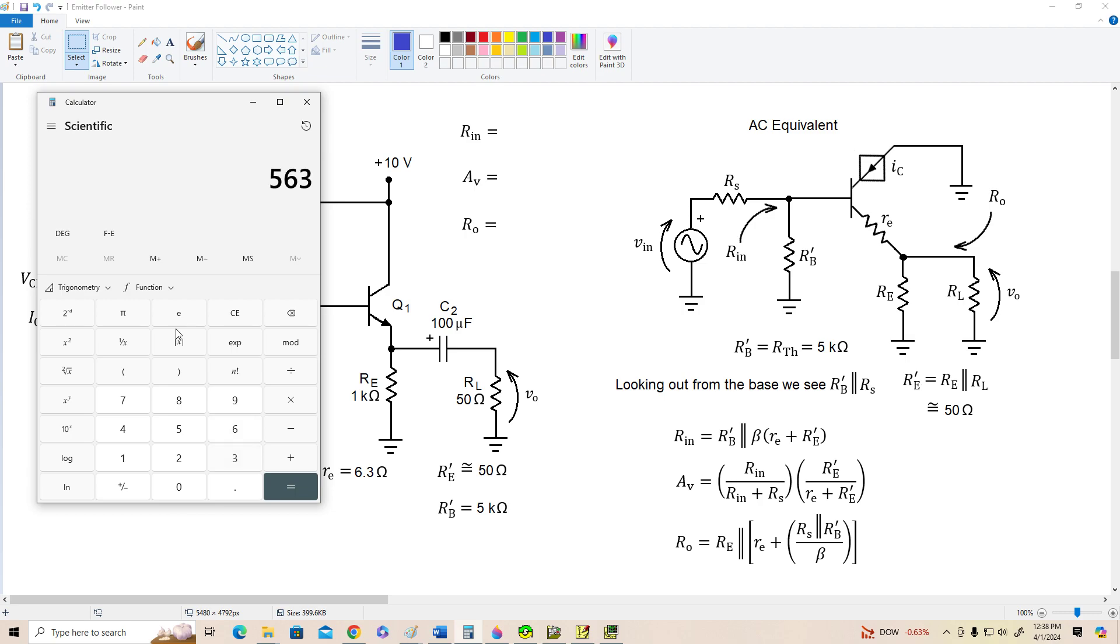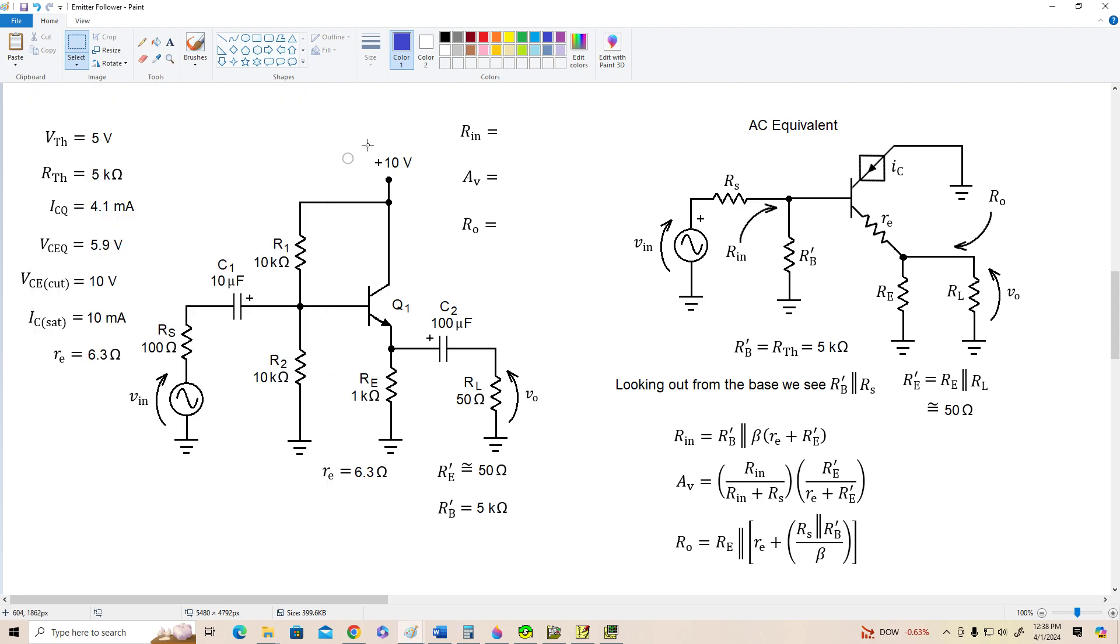So let's see what we get here. 5,630 in parallel with 5,000 gives us an input resistance of about 2.6K ohms.